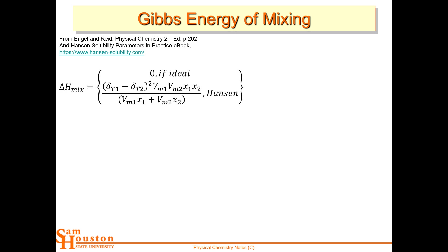One model — not the only model, but one I teach — is the Hansen solubility parameters. This is the model for the delta H of mixing. For ideal solutions, one definition is that when you mix the molecules, there's no enthalpy change. The intermolecular attractions you had to pull apart for substance A, and for substance B — because that's essentially what mixing is. You pull A apart, you pull B apart, that raises the energy. Then you mix A and B and condense it, and you get energy back. The difference between those is delta H.